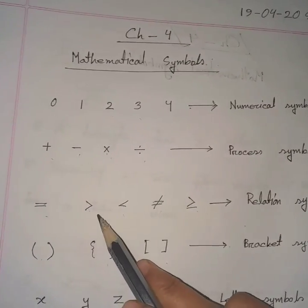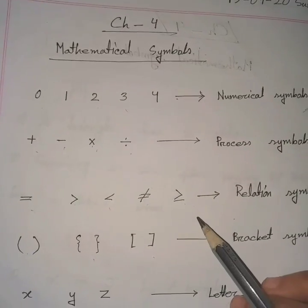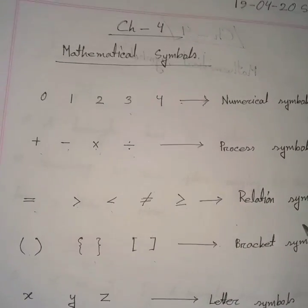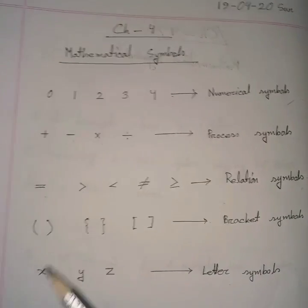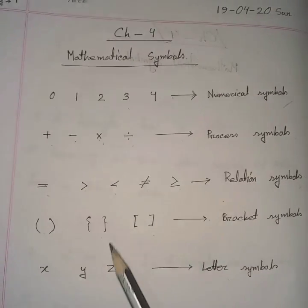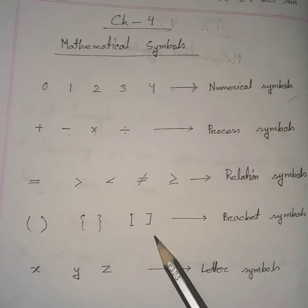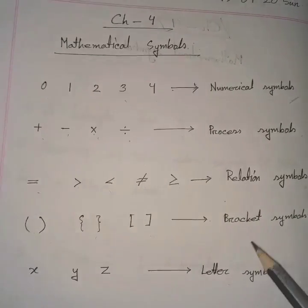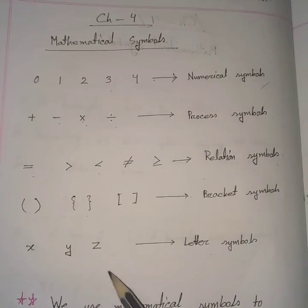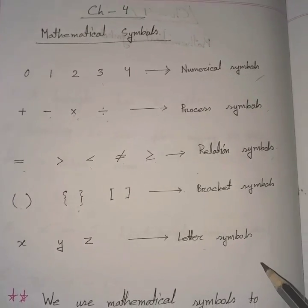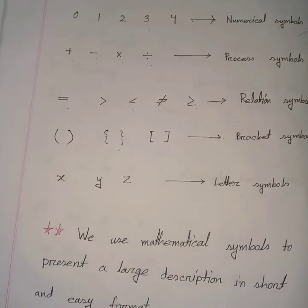Equal, greater than, less than, not equal, greater or equal and so on — they are called relation symbols. First bracket, second bracket or curly bracket, third bracket are called bracket symbols. X, y, z are letter symbols. Letter symbols are also called special symbols.